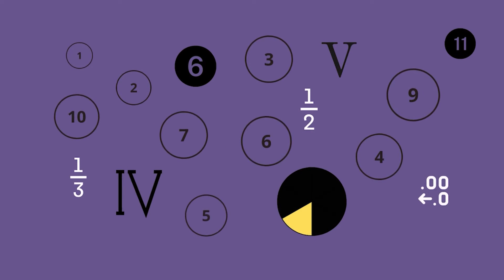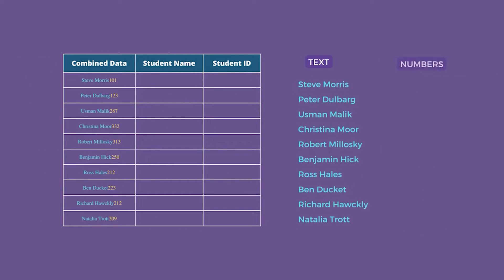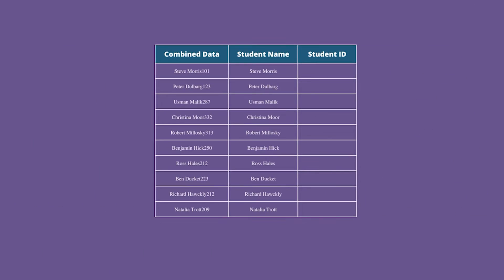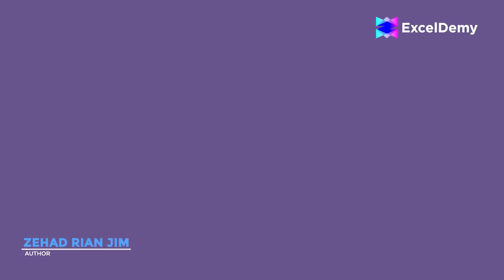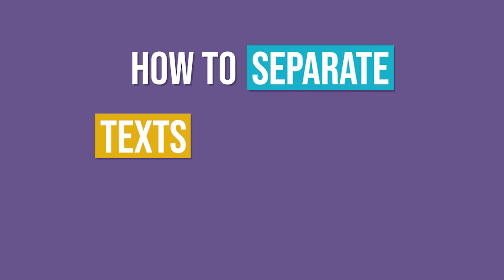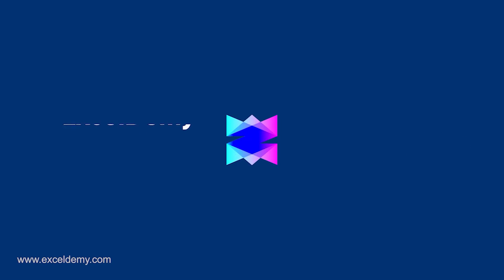Hello everyone. If you are working with numerical data in Excel such as financial data or scientific data where you need to work with both text and numbers, then you know how important it is to separate text and numbers from an Excel cell. You can easily do this in Excel within a second. This is Chihadrian Jim from Excel Demi.